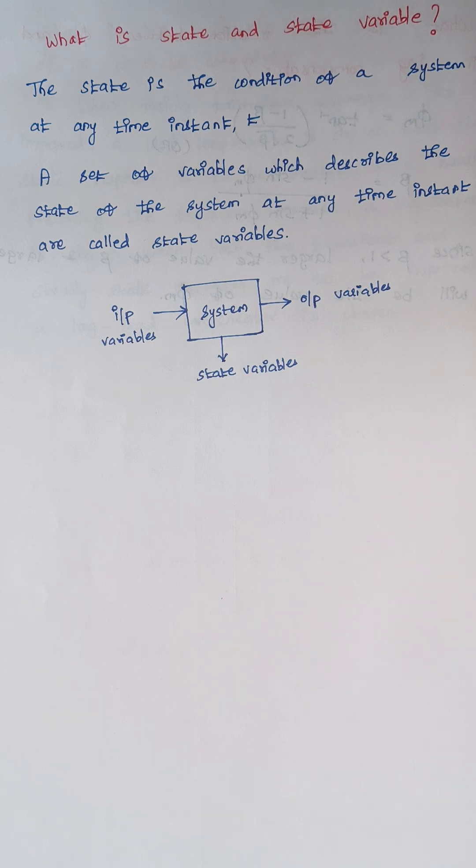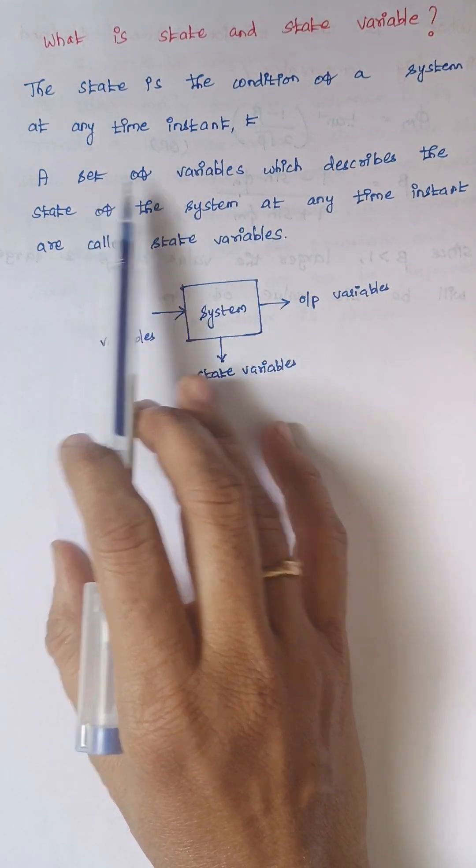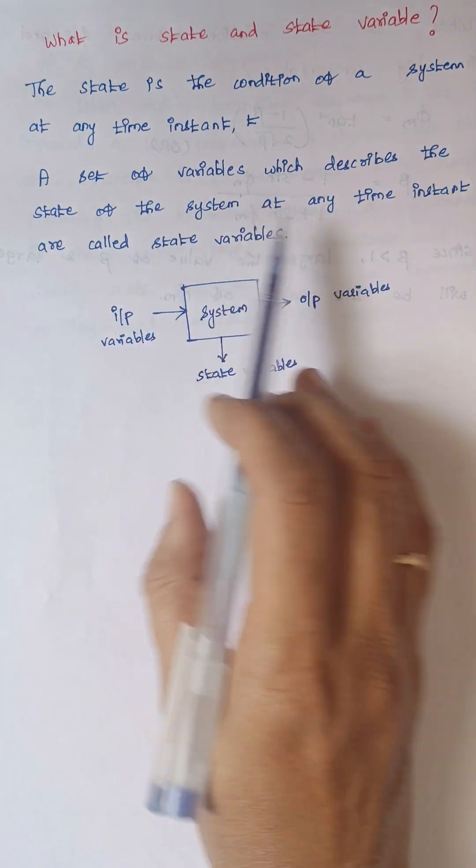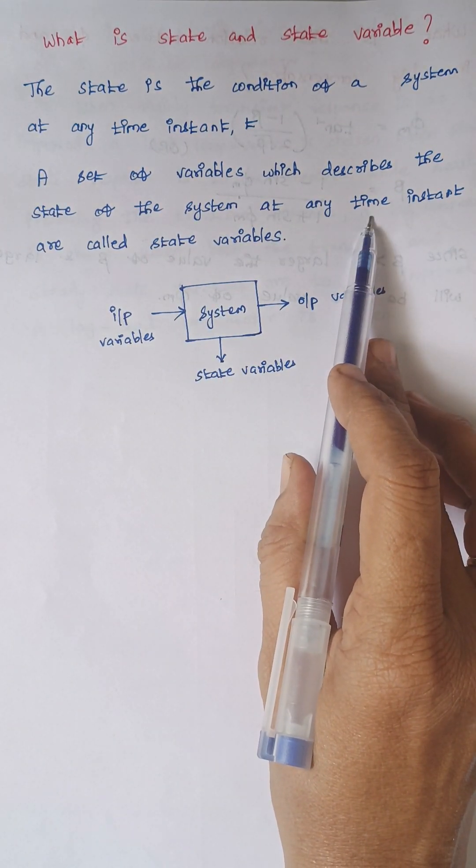They are known as state variables and these state variables vary according to the time. That is the reason why a set of variables which describes the state of a system at any time instant is mentioned, because the state variables are those which vary accordingly.